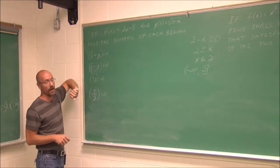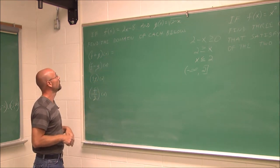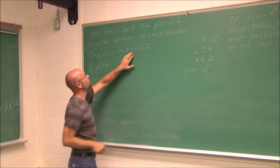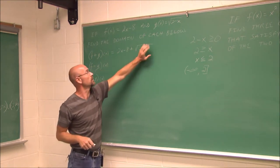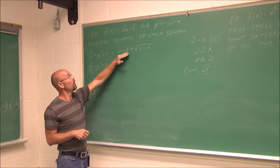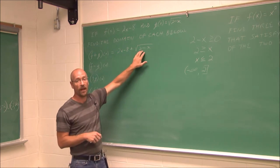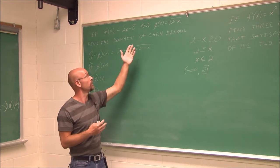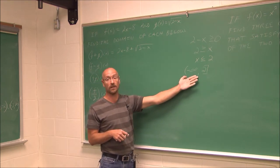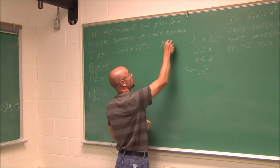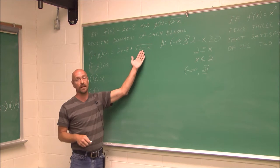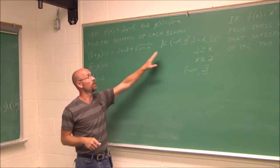If we want to find f plus g of x, we get 2x minus 8 plus the square root of 2 minus x. There are no like terms since one part is under the radical, so that's as far as we can simplify. When we add functions together, the domain is the intersection of the two domains. f of x is all reals, g of x is negative infinity to 2, so the domain of f plus g is negative infinity to 2 — the domain of g of x, since that's the only piece with a restriction.